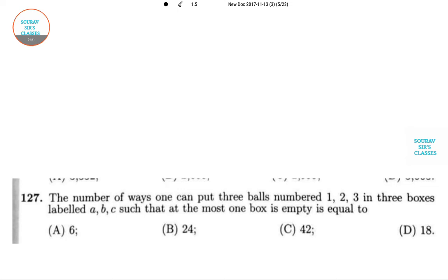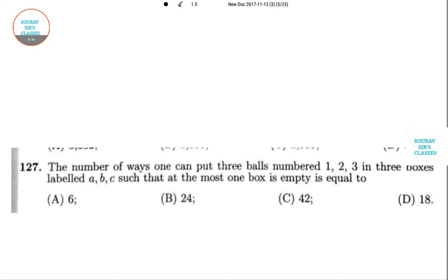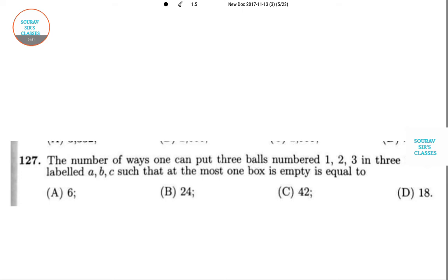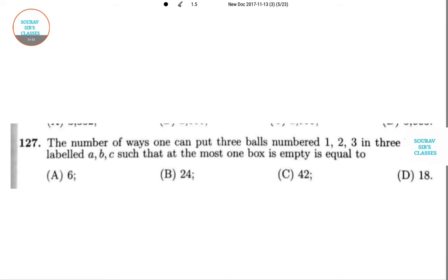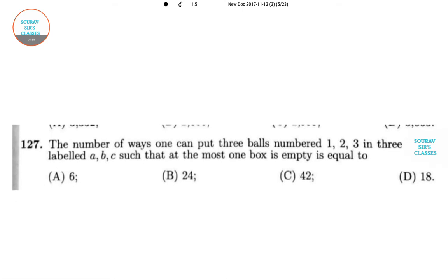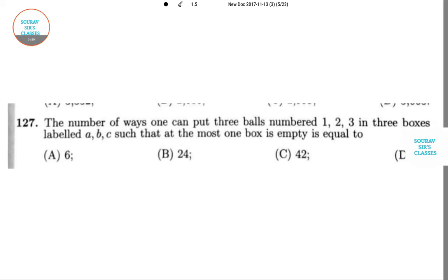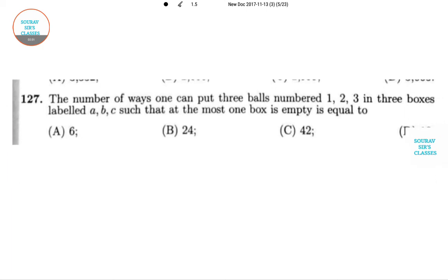Now I'll point out another question associated with this: 127 from the same book, Test of Mathematics. The number of ways one can put three balls numbered 1, 2, 3 in three boxes labeled A, B, C such that at the most one box is empty. So we find the structure where no box is kept empty.